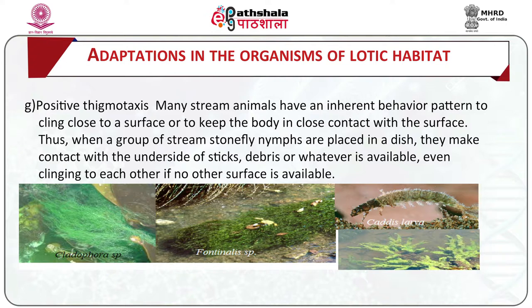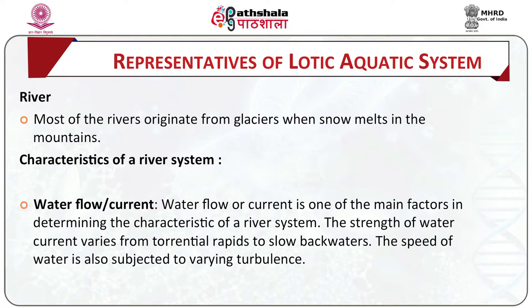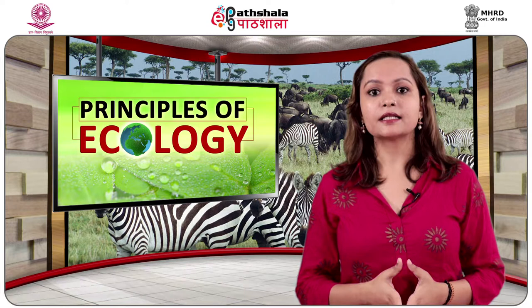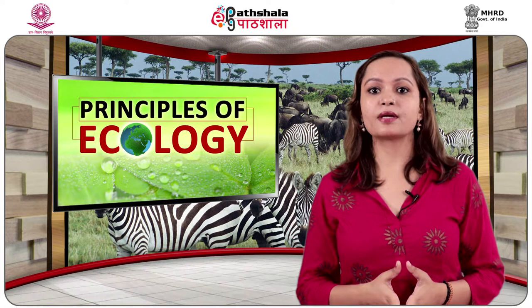Representatives of the lotic aquatic system — River: most rivers originate from glaciers when snow melts in the mountains. Therefore, at the headwaters, rivers are usually cold and full of oxygen, running swiftly through shallow riverbeds. Along their path down the mountains, they become broad, warmer, slower, wider and less in oxygen content.